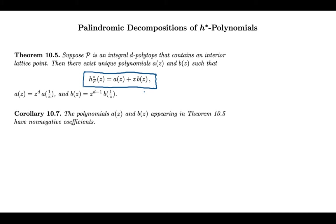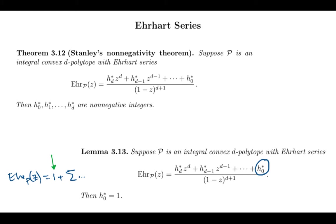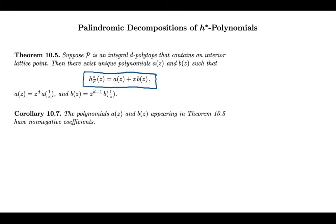What makes this result special is that the polynomials in this decomposition have non-negative coefficients. You might remember in chapter 3 we proved that the h-star polynomial always has non-negative coefficients. This was theorem 3.12, and so you can think of theorem 10.9 as a refinement, because not only does h-star have non-negative coefficients, but the polynomials a and b in this unique decomposition also have non-negative coefficients. That's a stronger statement than saying h-star has non-negative coefficients.